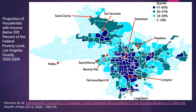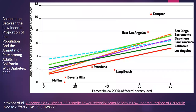You can hypothesize that this relates to access to care, access to physical activity, fruits and vegetables, and other factors. The point here is it's important to do that descriptive epidemiology piece before jumping into analytics, so you have a clear understanding of your population and what kinds of factors might be at play.